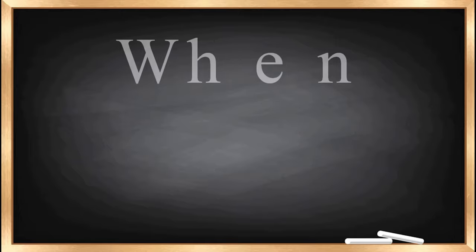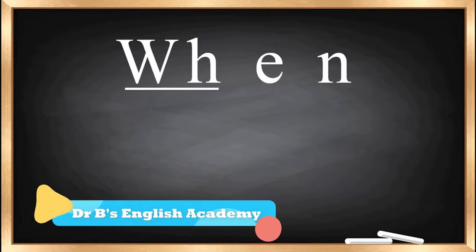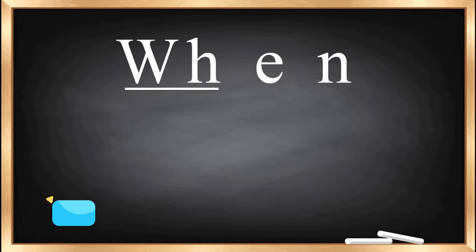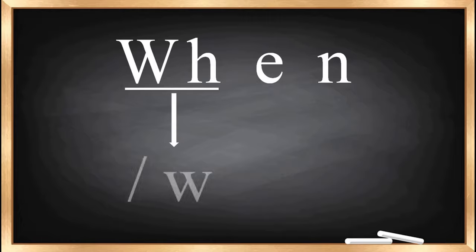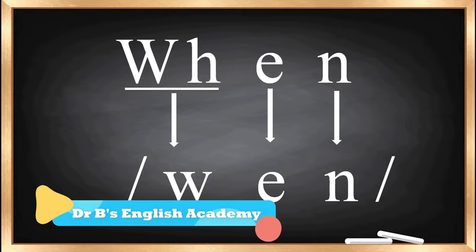The next word is 'when'. Here WH produces only one sound: /w/. You can transcribe this sound as /w/, then E gives /e/, and N gives /n/. So this is the way you may transcribe the word 'when': /wen/.